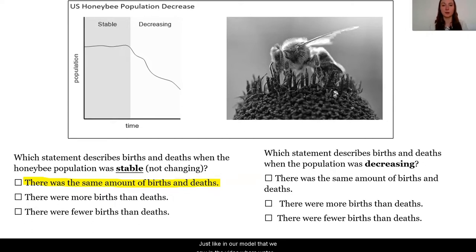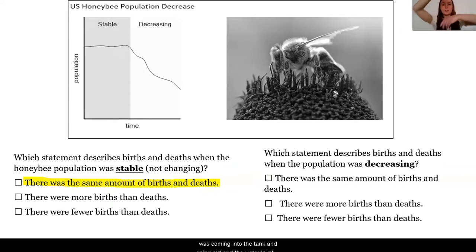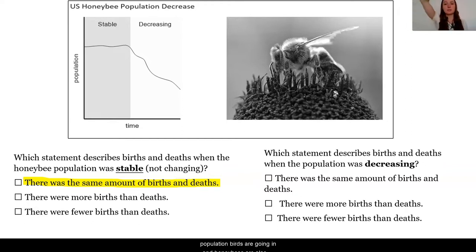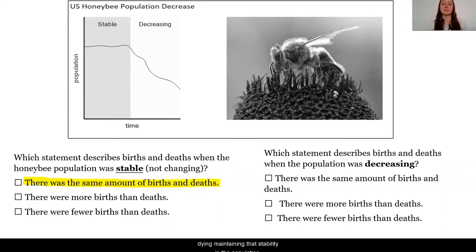Just like in our model that we saw in the video where water was coming into the tank and going out and the water level remained stable, the same is occurring with the honeybee populations. Births are going in and honeybees are also dying, maintaining that stability in the population.